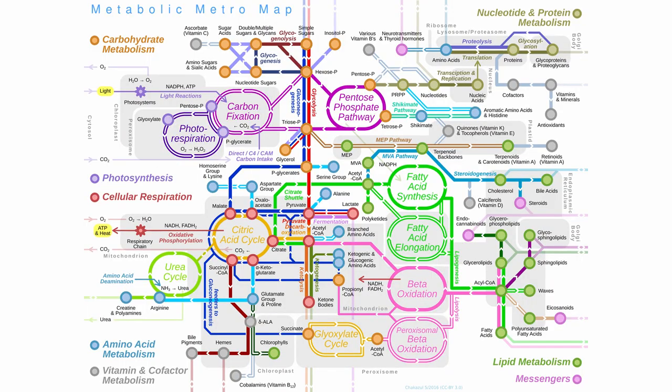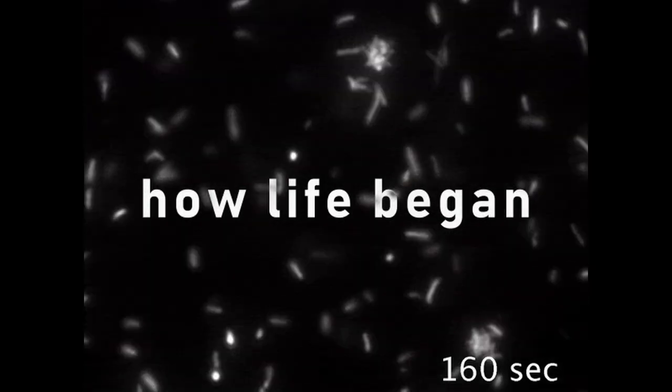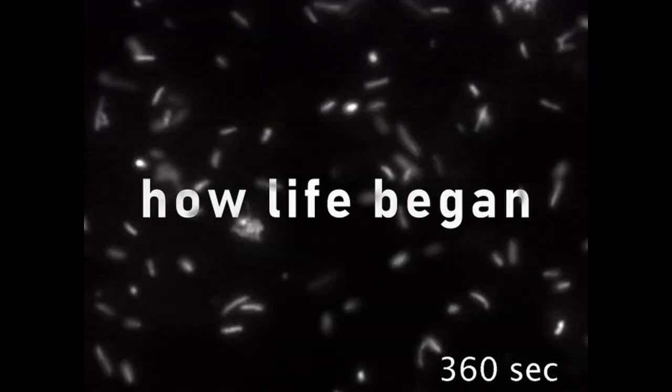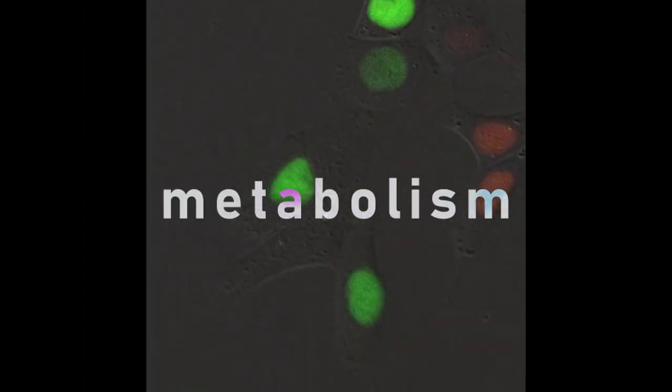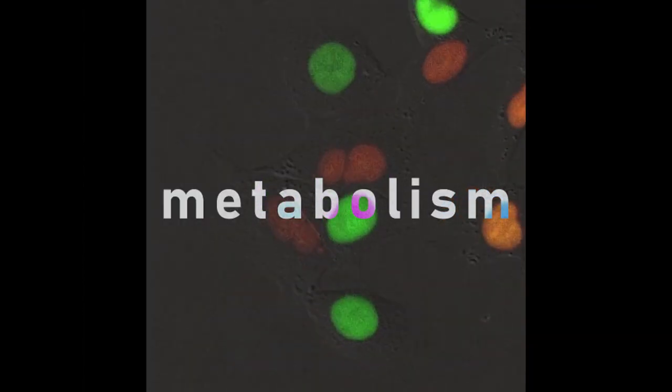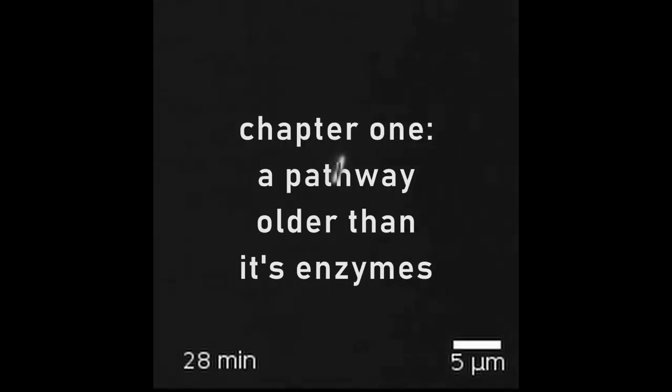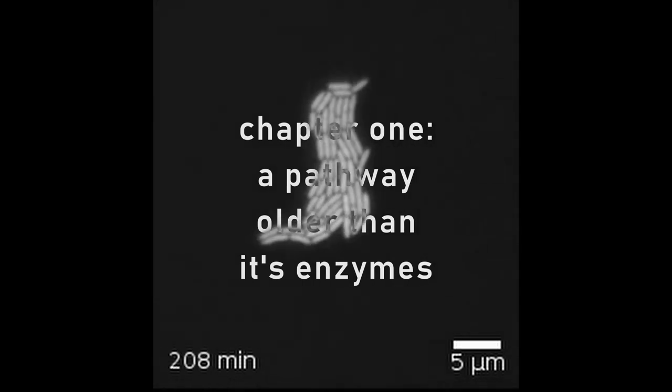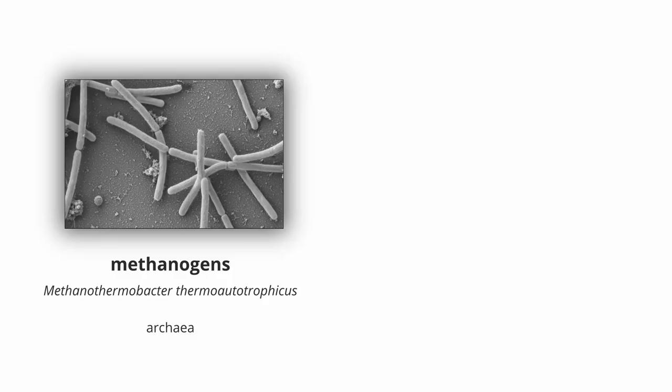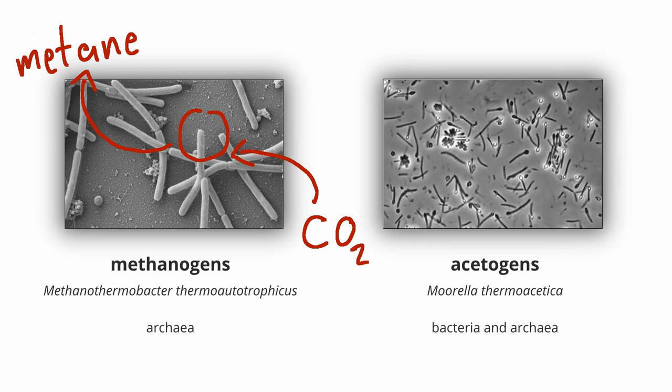Living organisms have a complex set of metabolic reactions, and one key question is how this metabolism developed. One very old metabolic pathway was found to be the Acetyl-CoA pathway in Methanogens and Acetogens. Methanogens are archaea producing methane as a product of their energy metabolism by reduction of CO2. Acetogens, however, are a group of bacteria and archaea that produce acetate out of CO2.